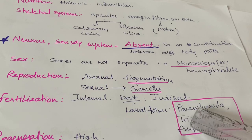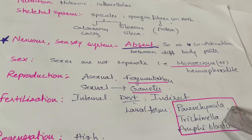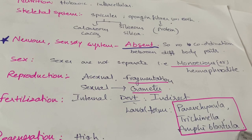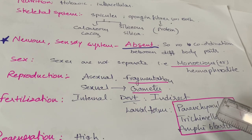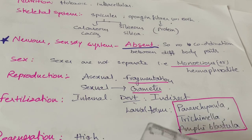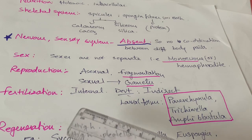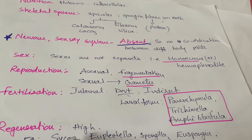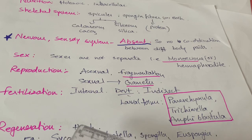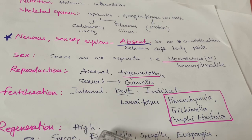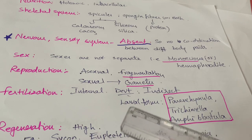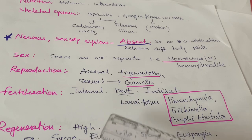Three types of larval forms are present in Porifera: parenchymula larva, trichimella larva, and amphiblastula larva — these are important for examinations. Regeneration is the reformation of lost parts. If Porifera accidentally loses some part of the body, it immediately regenerates that part. The regeneration capacity is very high in sponges — if you cut sponges into pieces, each piece develops into a new individual.